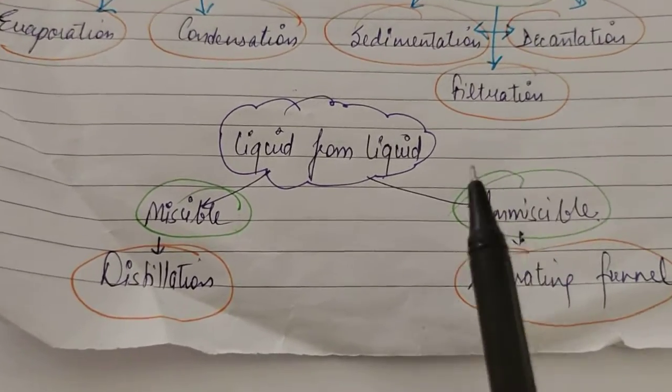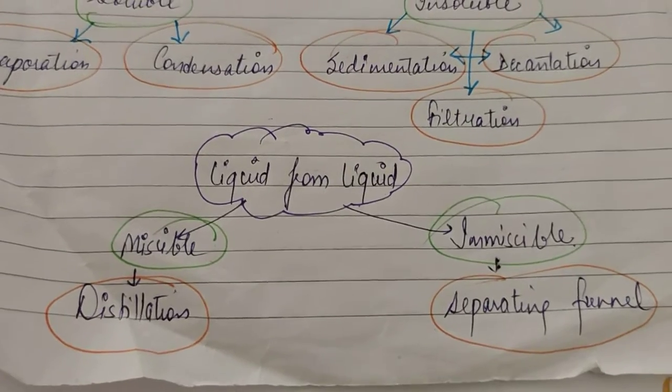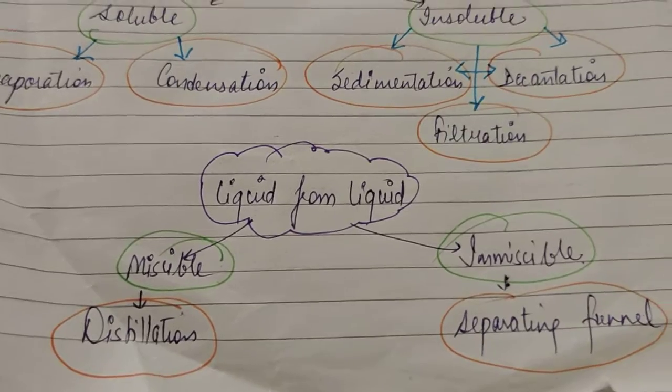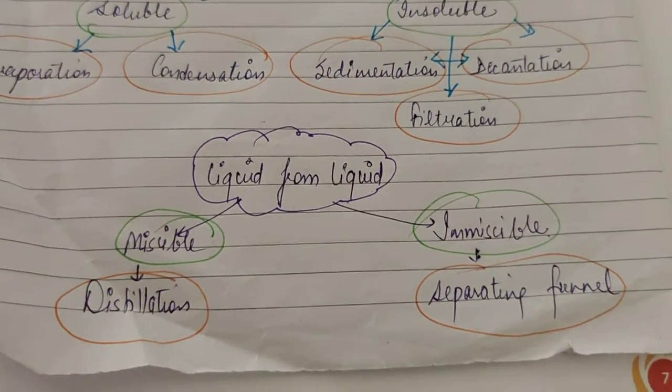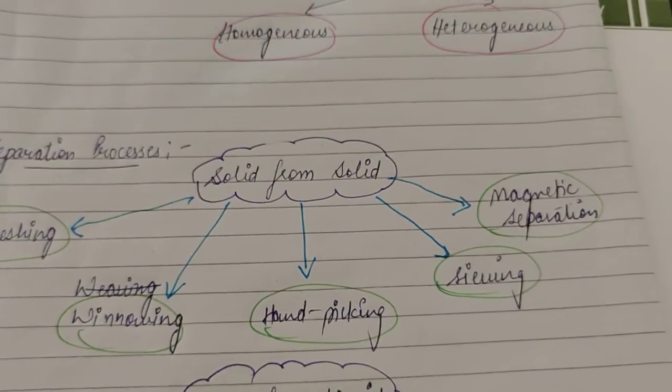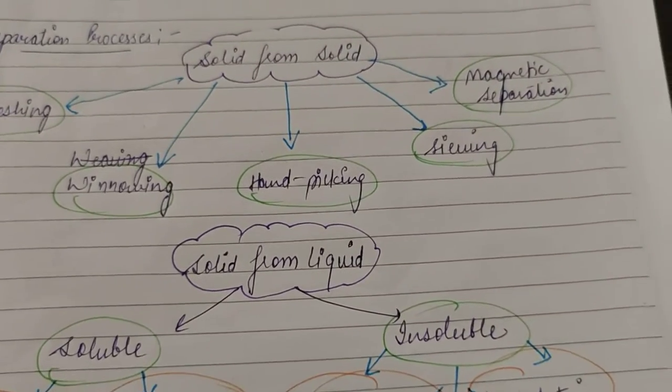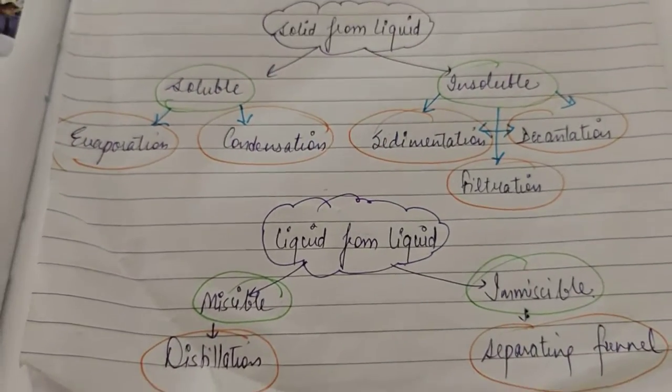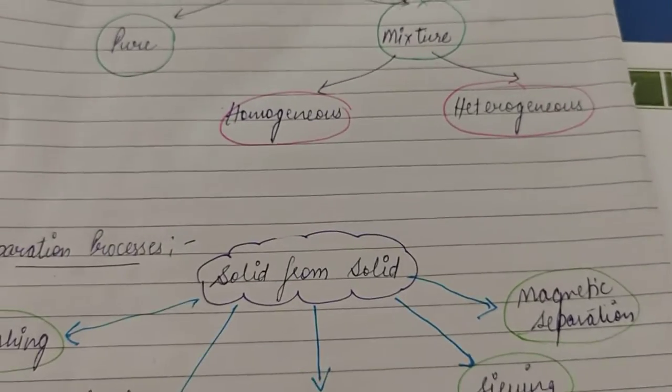And the another is immiscible liquids, like oil and water. If the two liquids you are having are not soluble in each other, then you can separate them with the help of separating funnel, whose basis of separation is difference in density. So these are all the separation processes, depending on which mixture you have—a solid and solid mixture, or solid and liquid mixture, or liquid and liquid mixture. These are the separation processes which we have done in the chapter.